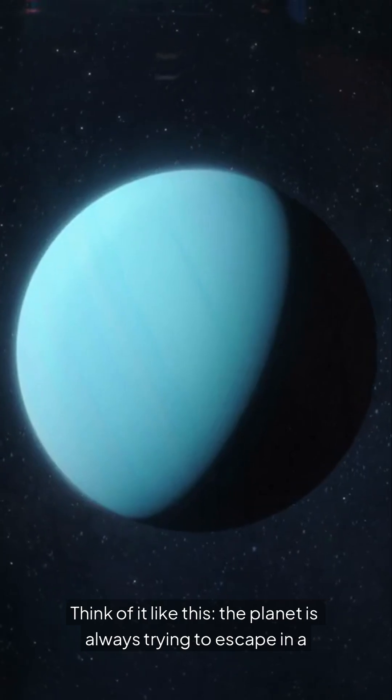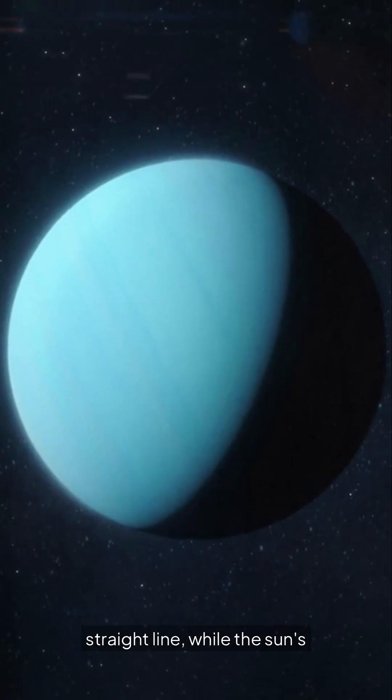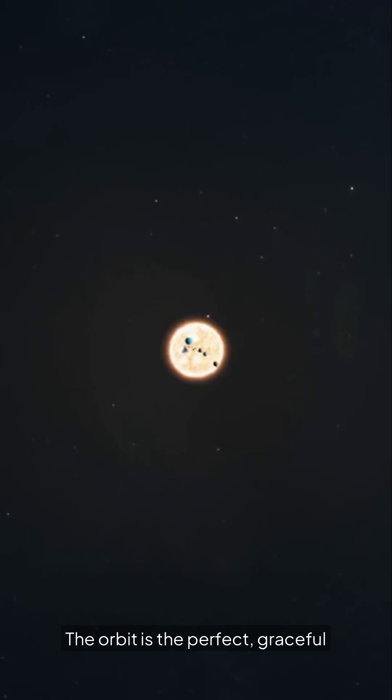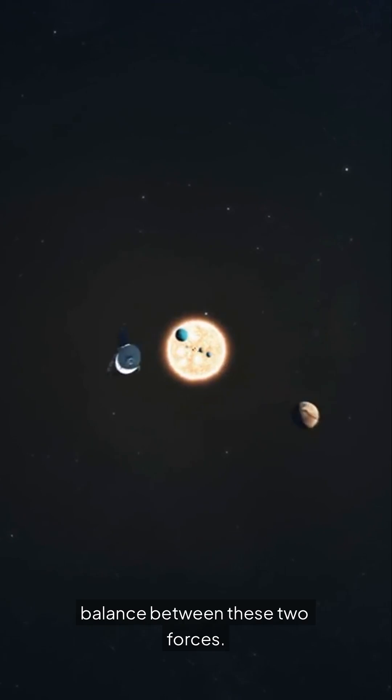Think of it like this. The planet is always trying to escape in a straight line, while the sun's gravity is always trying to pull it in. The orbit is the perfect, graceful balance between these two forces.